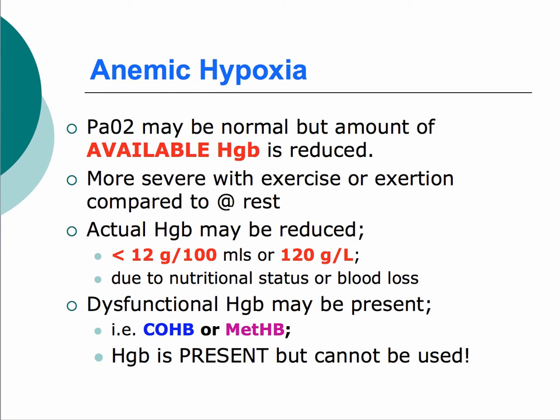Anemic hypoxia refers to the ability of hemoglobin to bind oxygen. Oxygen is transported around the body either dissolved in plasma or bound to hemoglobin, and the overwhelming method is binding to hemoglobin. If you have anemia and reduced available hemoglobin, your ability to carry oxygen is lower and you can't deliver as much to the tissues. If hemoglobin drops below 12, you may start seeing signs of anemic hypoxia. Hemoglobin dysfunction — such as carboxyhemoglobin and methemoglobin — can also cause this.